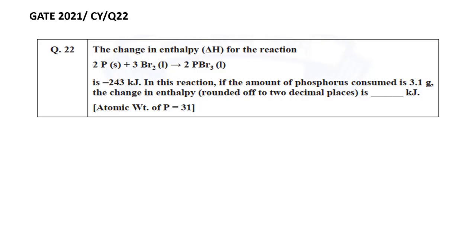Basically here we have to find out the change in enthalpy ΔH when the amount of phosphorus consumed is 3.1 g. Atomic weight of phosphorus is given as 31.